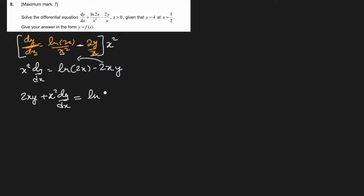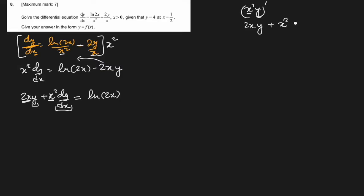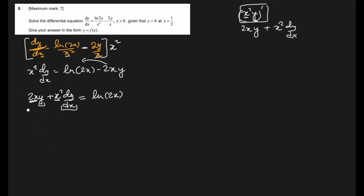Looking at the left side: 2xy is the derivative of x² times y with respect to x (product rule gives 2x·y + x²·dy/dx). So the left side is exactly d/dx(x²y). This means we can write d/dx(x²y) = ln(2x), and integrating both sides with respect to x gives x²y = ∫ln(2x) dx.